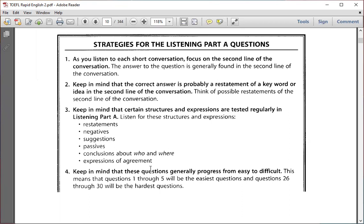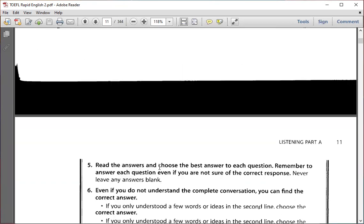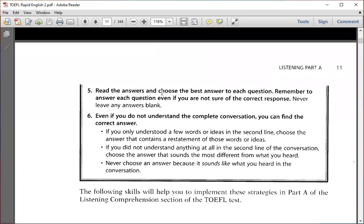Number five: Read the answers and choose the best answer to each question. Answer each question even if you are not sure of the correct response. Never leave any answers blank. Number six is important: Even if you do not understand the complete conversation, you can find the correct answer. First, if you only understood a few words or ideas in the second line, choose the answer that contains the restatement, not the same sound. If you don't understand anything at all in the second line of the conversation, choose the answer that sounds the most different. Never choose an answer because it sounds the same or similar.